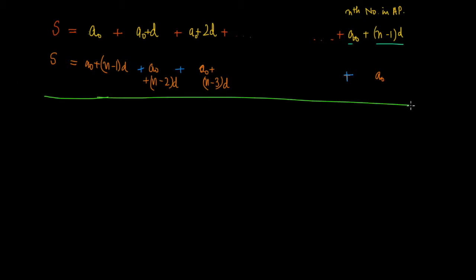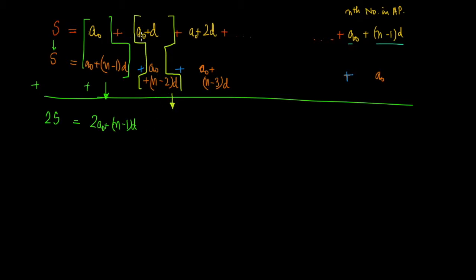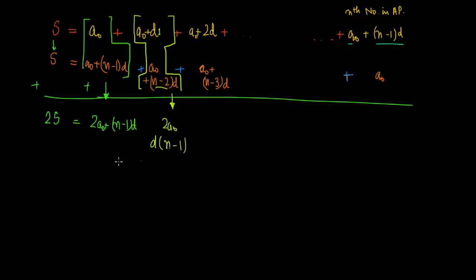Now we add the two versions of S together. Adding a number to itself gives two times the original, so we get 2S on the left. On the right, the first pair sums to a₀ + (n−1)D. The second pair: adding the a₀ terms gives 2a₀, and the D coefficients give (n−2) + 1 = (n−1), so it's also a₀ + (n−1)D.